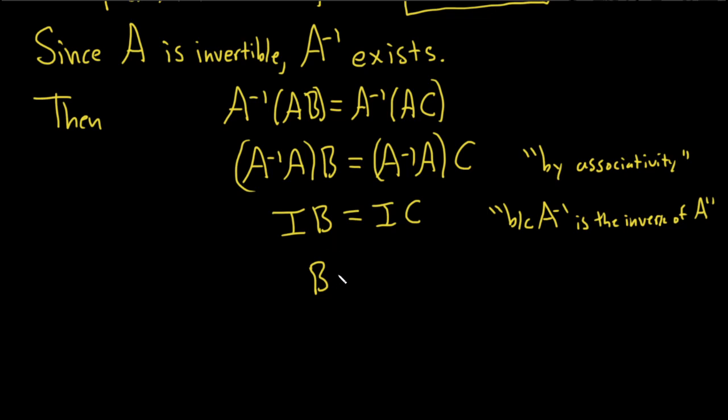And this is B, right? I times B is B. I times C is C. And this is because I is the identity matrix.